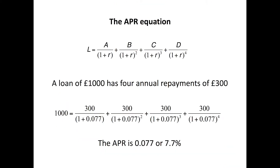Here is a very simple APR equation with a numerical example: a loan of £1,000 taken today, paid back in four instalments of £300 each over the next four years. We have the loan L on the left-hand side and payments A, B, C, D on the right. We bring them into equality by reducing the repayments by the rate of interest — the rate of interest is connecting them.